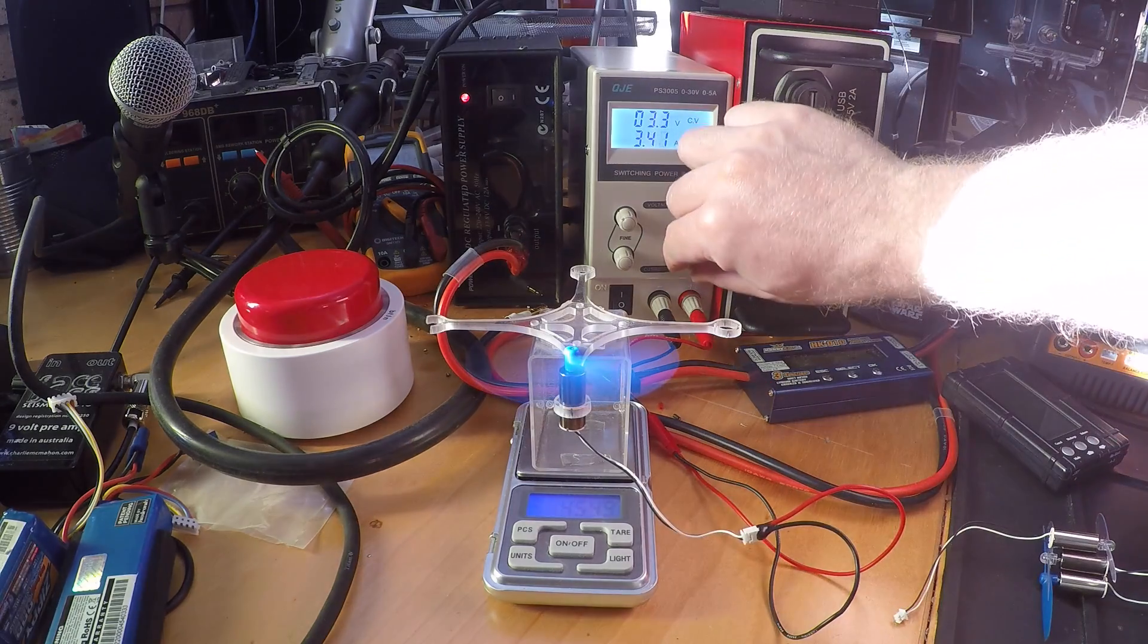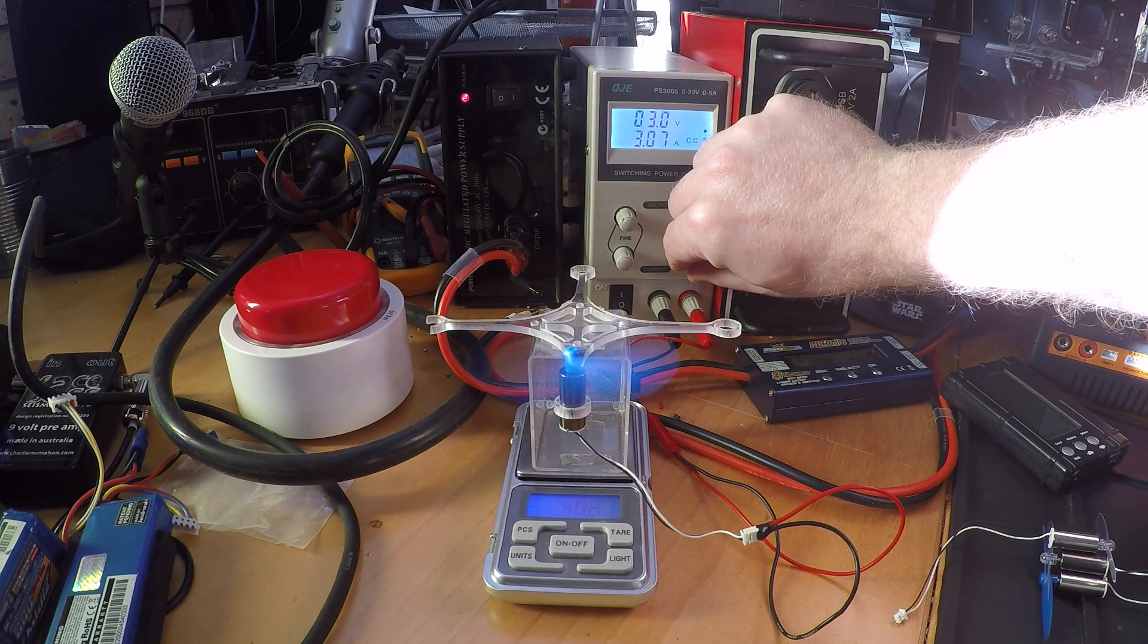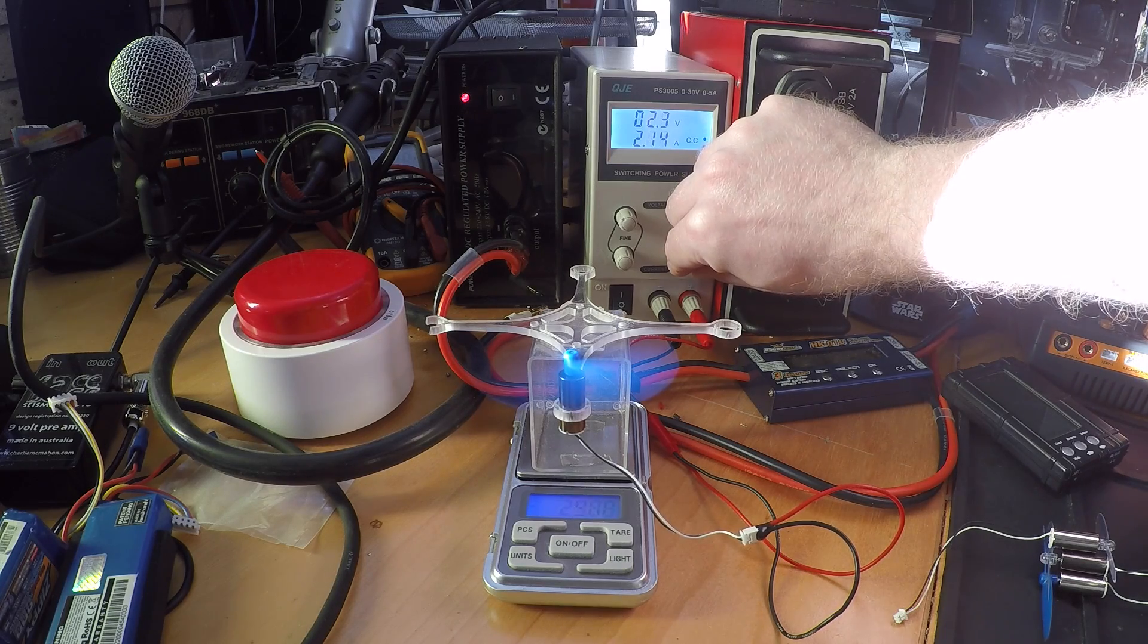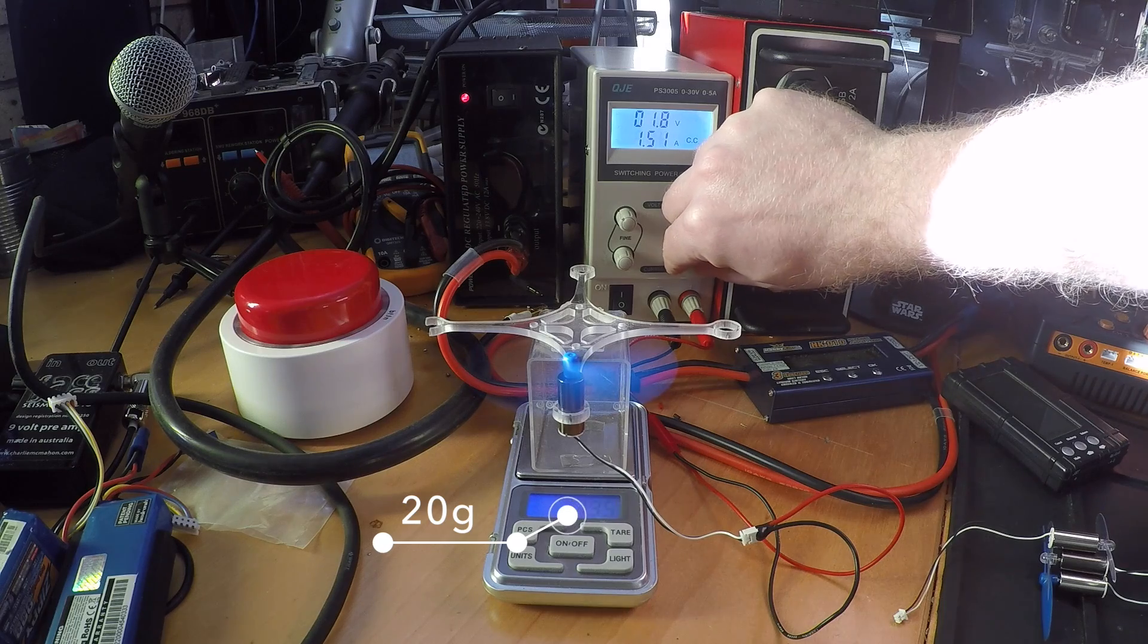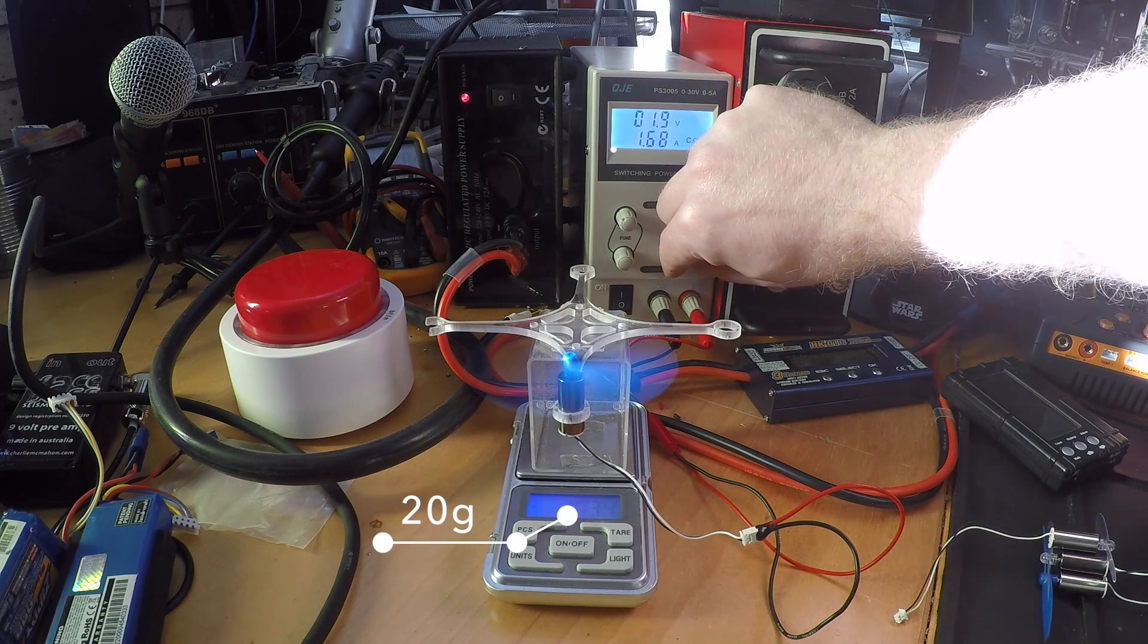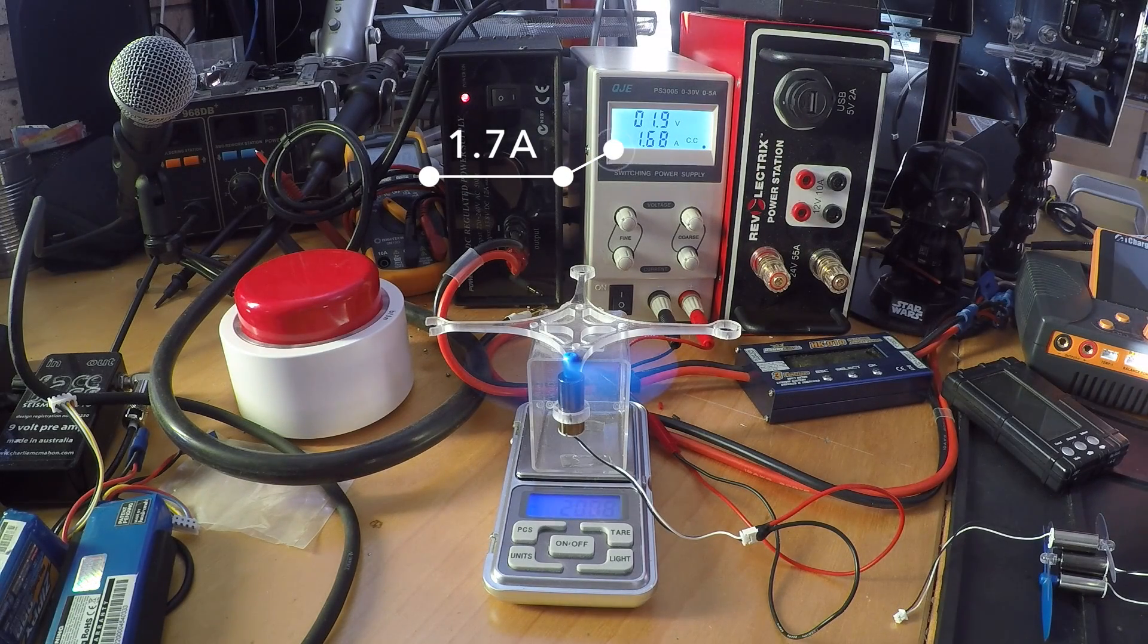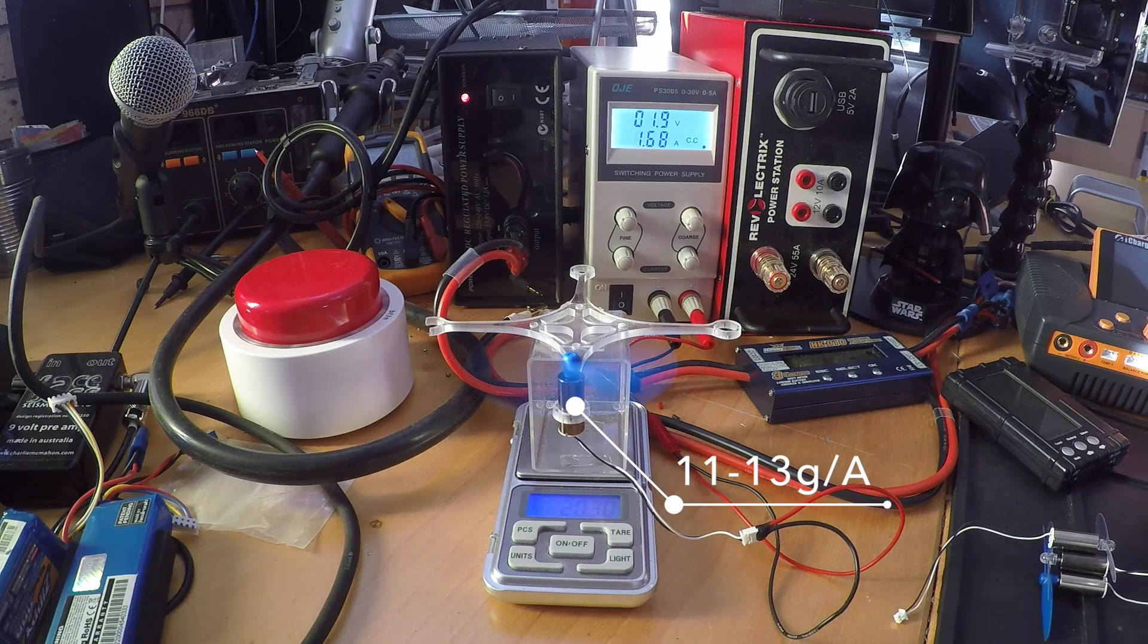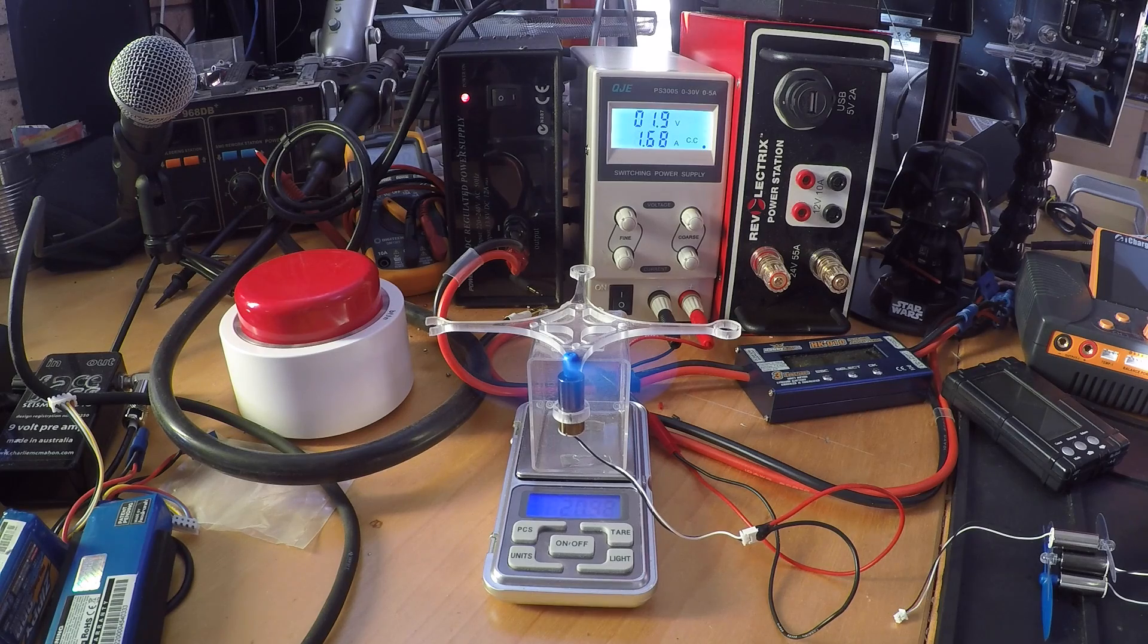Now, let's choke him a little bit. Turn the current down. 20 grams at 1.7 amps. That is 11 to 13 grams of thrust per amp.